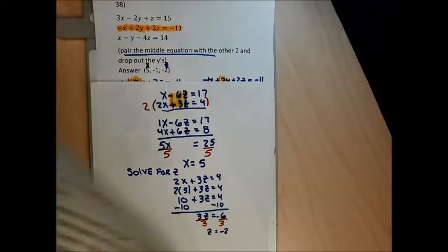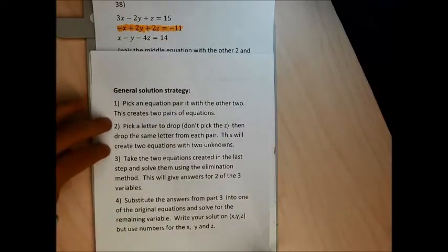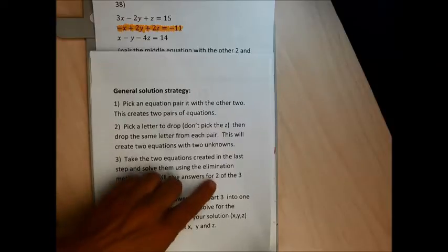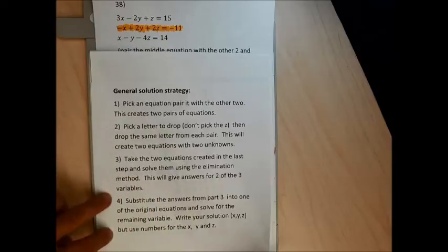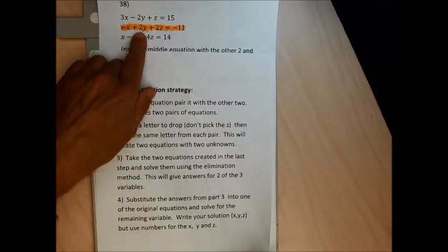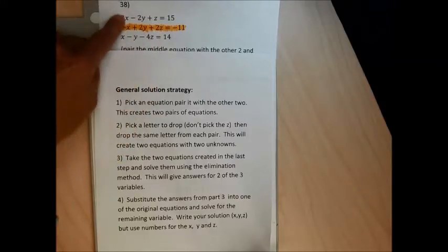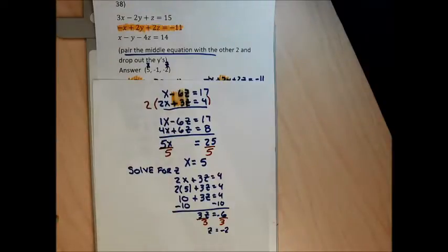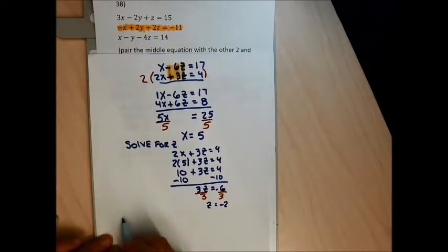Step four is the last thing I need to do: substitute the answers from the last step into any one of the three original equations and solve for the remaining letter — y. I don't like negatives in front of my letters, so I'm going to pick the highlighted equation. I could pick any of the three original equations — they all will give the same answer for y.